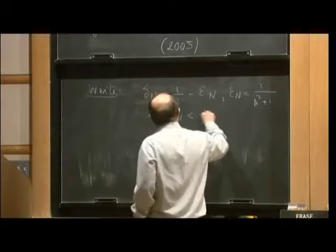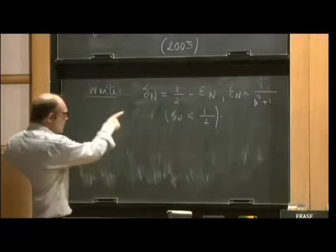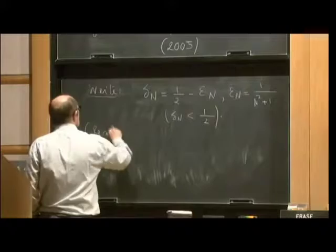So in particular, note that delta n is strictly smaller than one-half. And let me recall what this is.